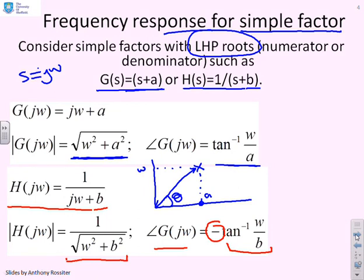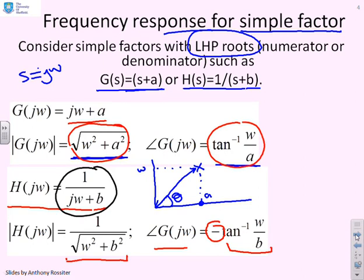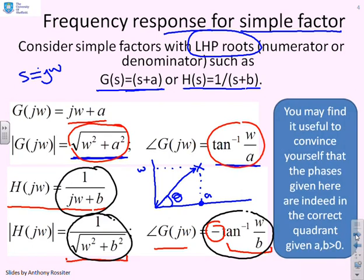Very simple formulas go with simple factors: for jω + a, a simple formula for the gain and a simple formula for the phase. You need to convince yourself that the phases given here are indeed correct, especially for the denominator one where a and b are greater than zero — but I'll leave that to you if you're not convinced already.